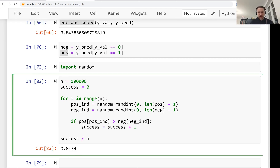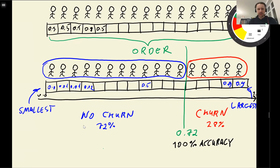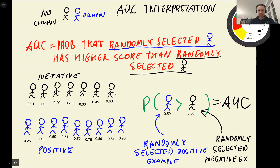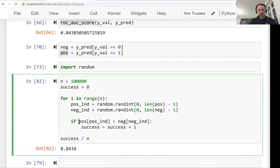This is a good interpretation of AUC: it tells us how well our model can order customers. In the perfect model, customers are ordered perfectly — every time we pick a positive (churning) example, it will have a higher score than any randomly picked negative (non-churning) example. In imperfect cases, sometimes the negative example has the higher score, which is why the success ratio equals AUC.